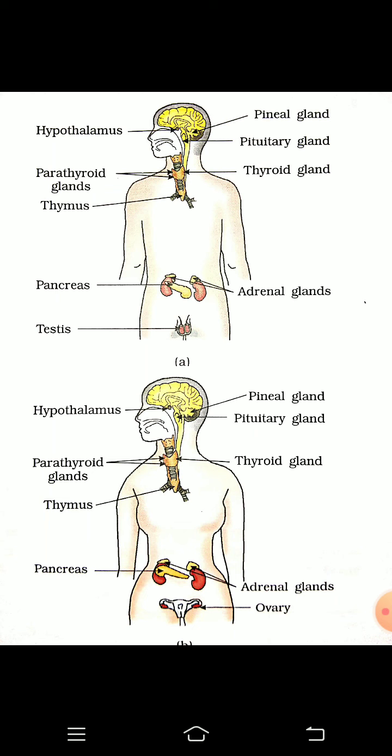The endocrine system consists of chemical coordination in human beings. All the endocrine glands together form the endocrine system. The endocrine glands secrete hormones, and these hormones are carried by blood to specific organs. Endocrine glands produce chemical substances, and the name of those chemical substances are hormones. These hormones are carried by blood, and since blood goes to all parts of the body, the hormones will reach the specific organs.